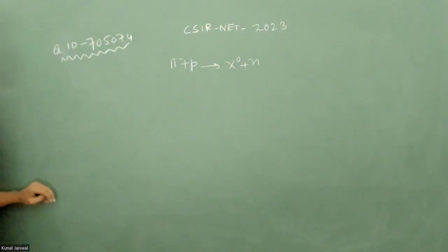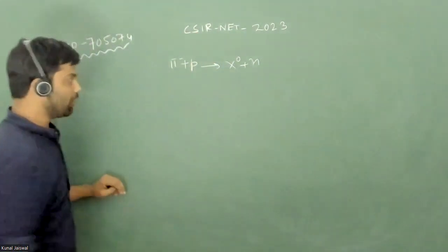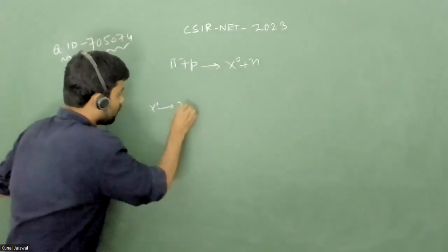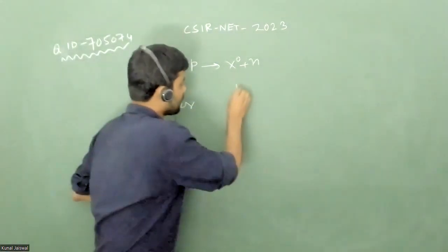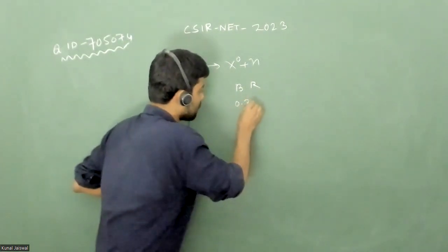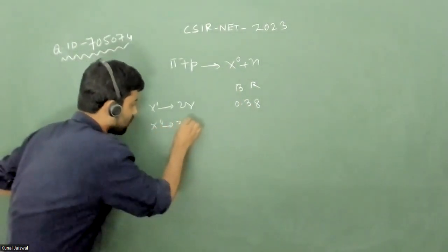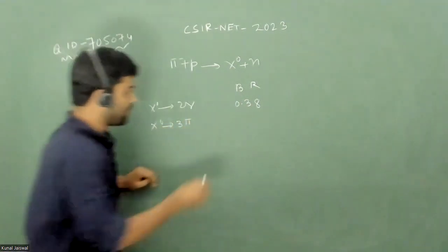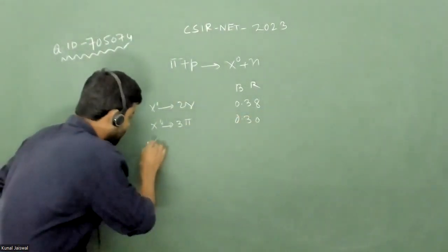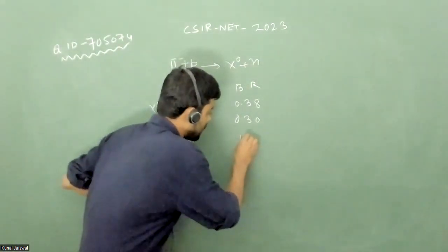This interaction is provided, and also the x0 neutral particle is decaying. It decays to two photons with a branching ratio of 0.38. It can also decay to 3 pi mesons with a branching ratio of 0.30. In addition, it can also decay to 2 pi mesons with a branching ratio of 10 to the power minus 3.